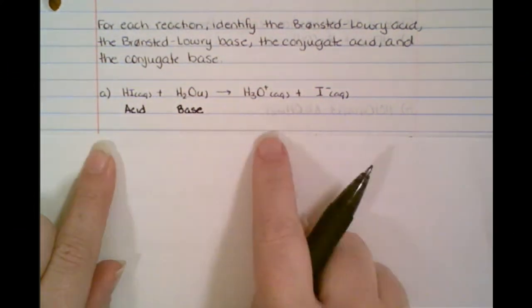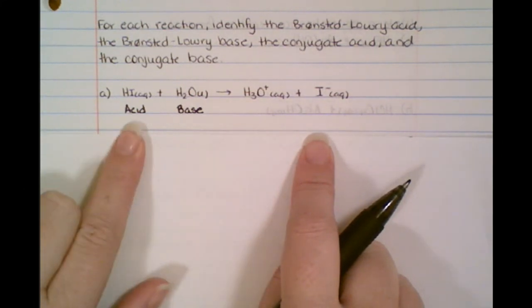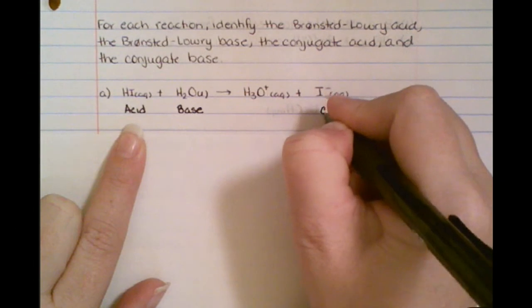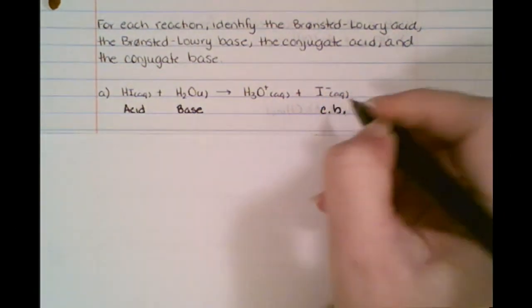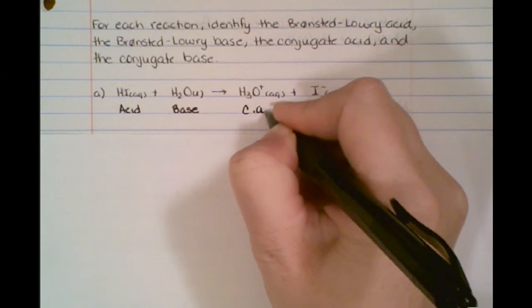Now, what happens over here? How do you know which one's a conjugate acid, and how do you know which one's a conjugate base? Well just think about it. If it's an acid on the left, it has to be a base on the right. So its partner over here is going to be a conjugate base, and the other one is going to be a conjugate acid.